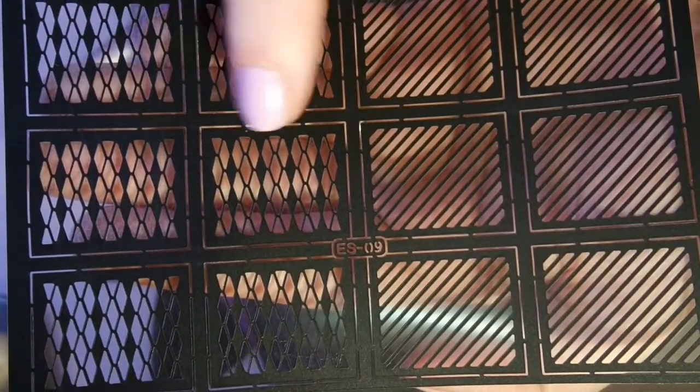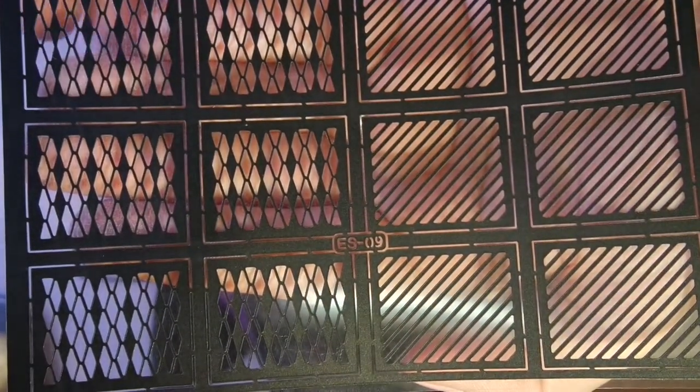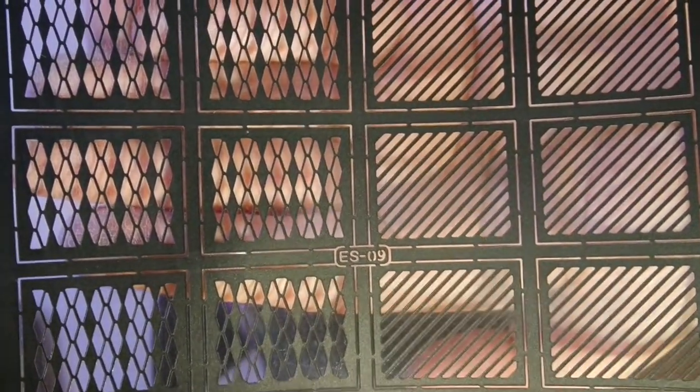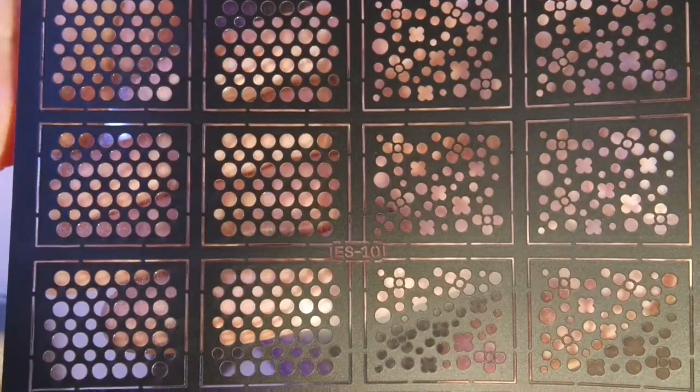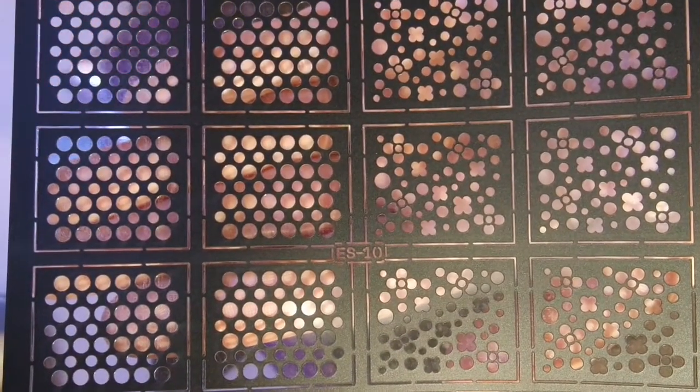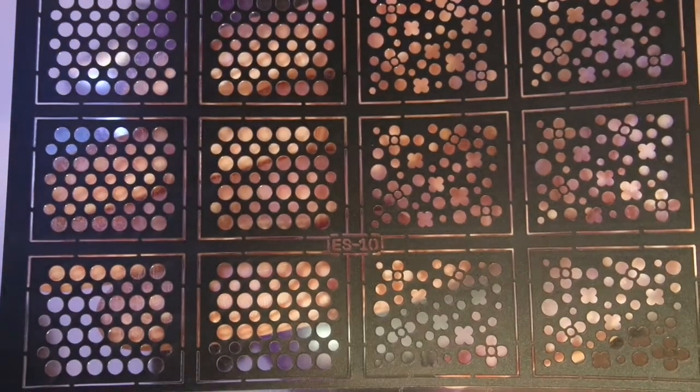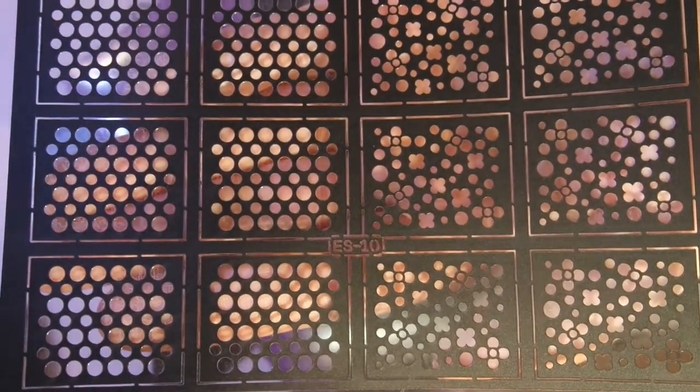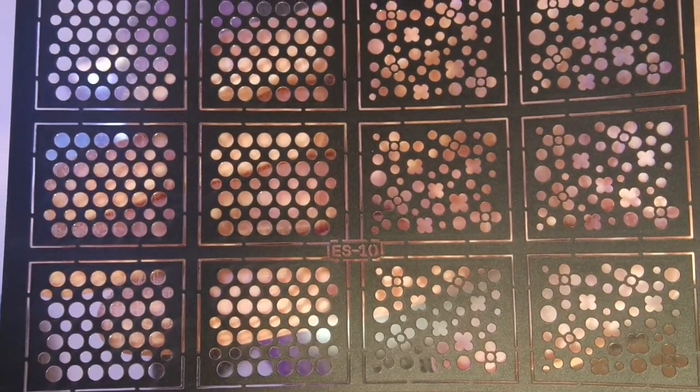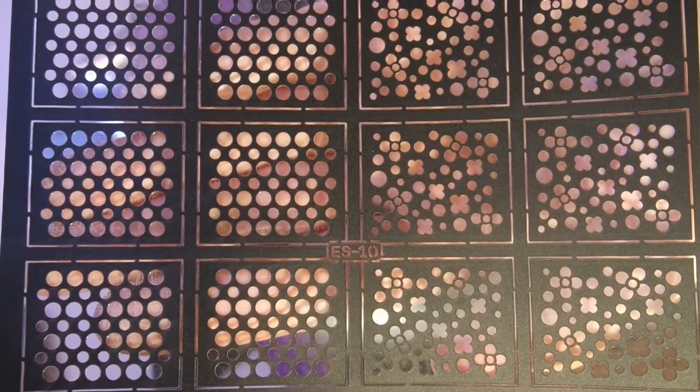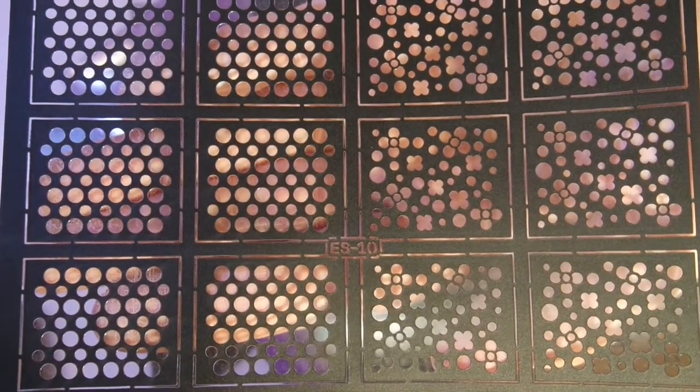And this is ES09. And this one has kinda like fishnet diamond designs. And then you have just the regular stripy ones. And I really like this sheet. This is ES10. And you have like larger and smaller polka dots. And on the other side you have these fun flowers. Those will be really cute for spring and summer manicures.